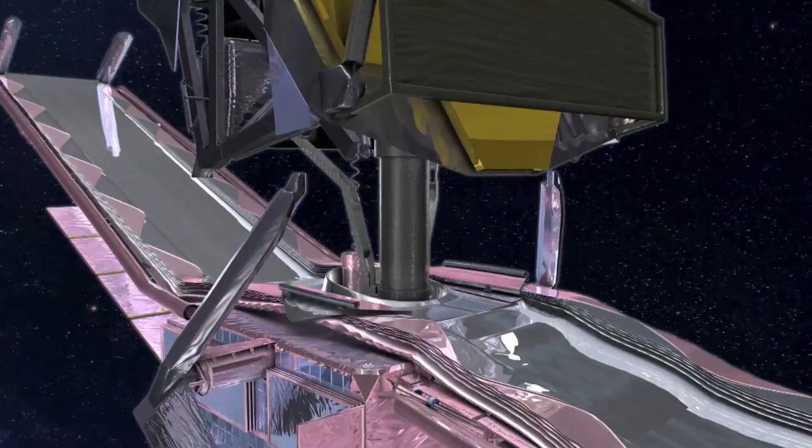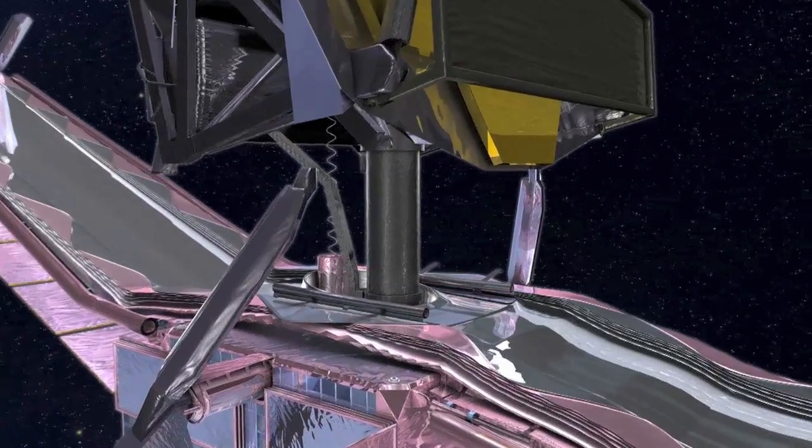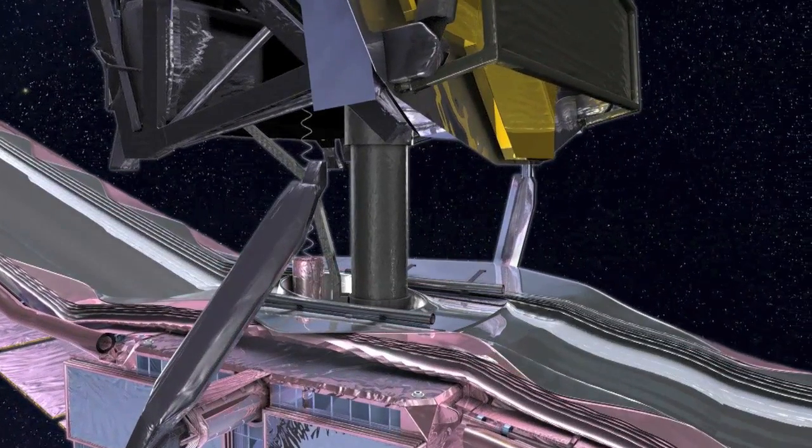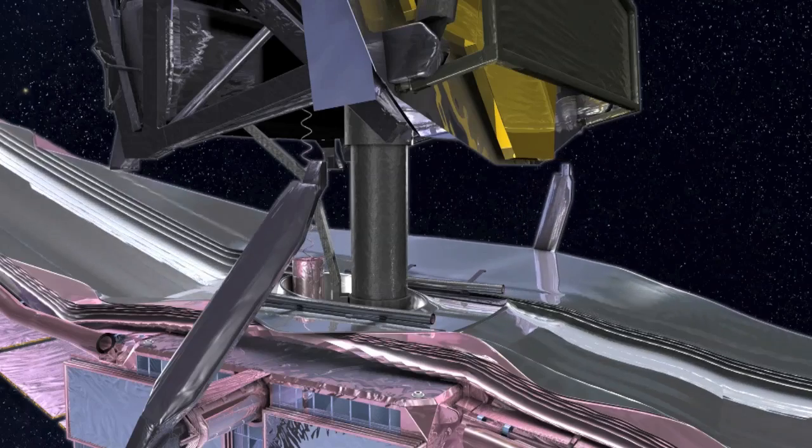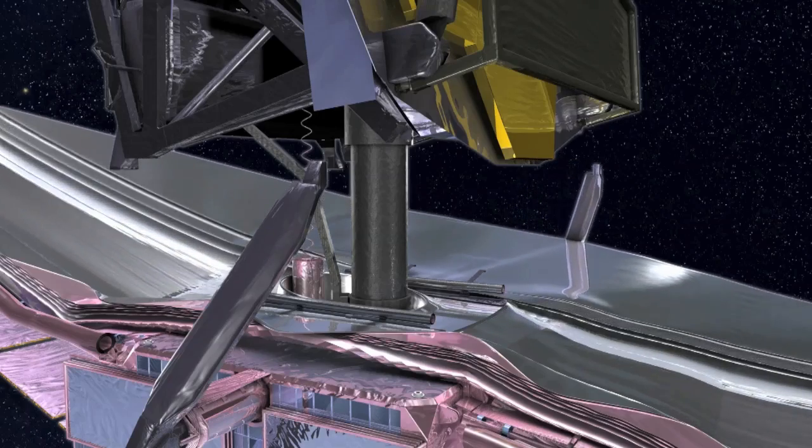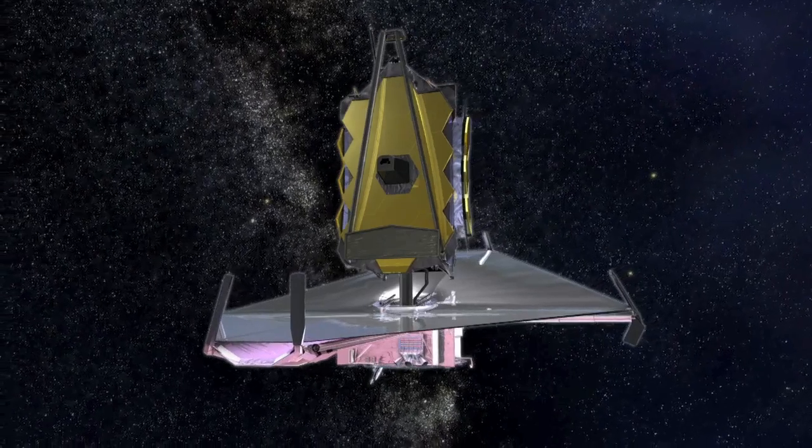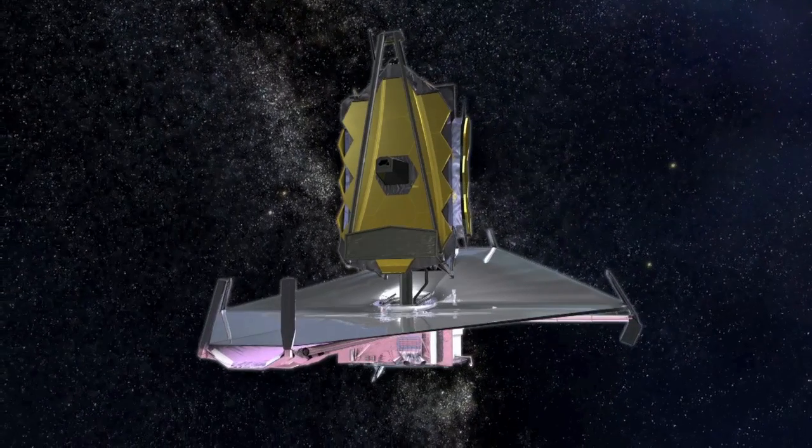The James Webb Space Telescope is among the most sophisticated instruments ever built, using technology that had to be invented specifically for its mission. Everything must deploy and work flawlessly the first time. It is too far away to fix, and there is no space shuttle to take us there.